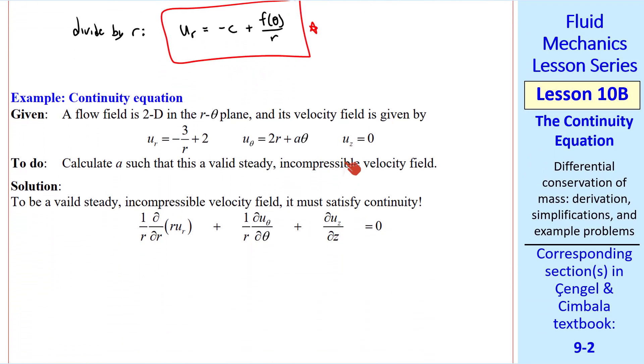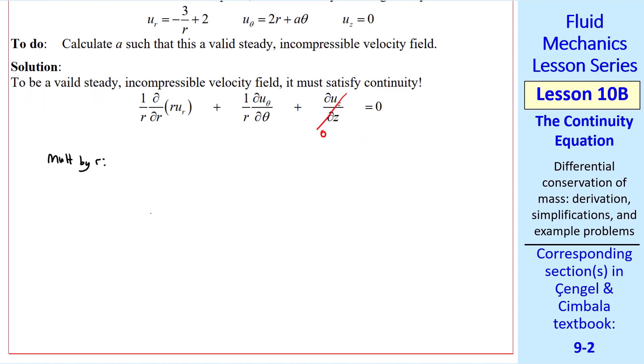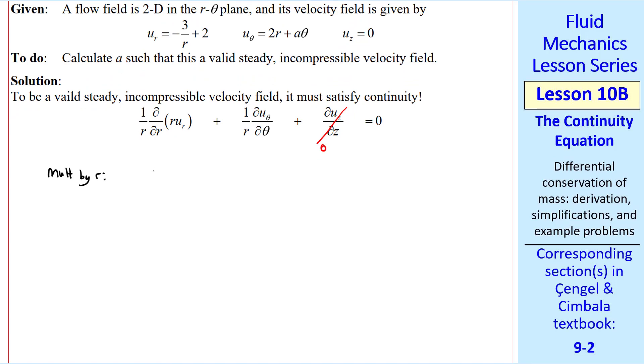Finally, I'll do this example. Again, we have a 2d flow in the r theta plane with this velocity field. We want to calculate this constant a, so that we have a valid, steady, incompressible velocity field. So, for the fourth time, we have to satisfy the continuity equation. Here, del u z del z is 0, and let's multiply by r for the two remaining terms, and the right-hand side, of course, which doesn't change. So, we have del del r of r u r, plus del u theta del theta, equals 0.